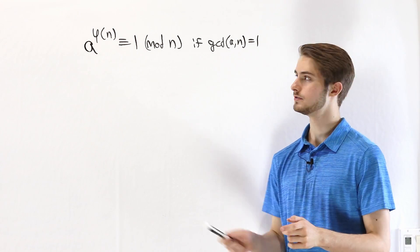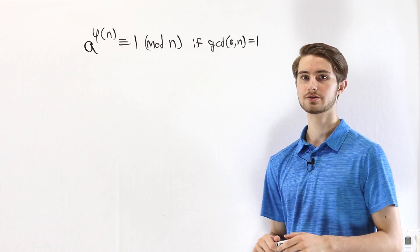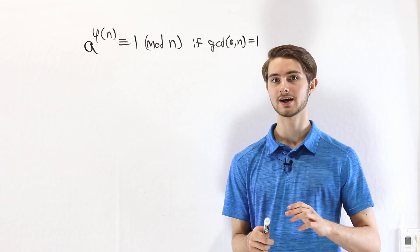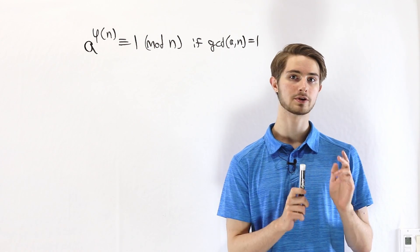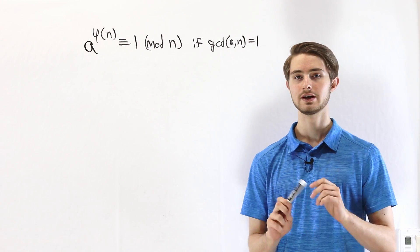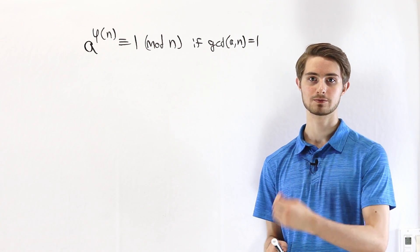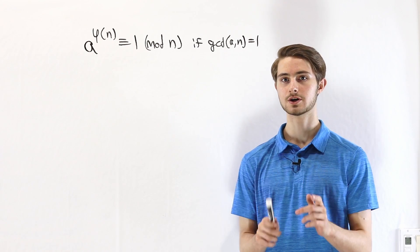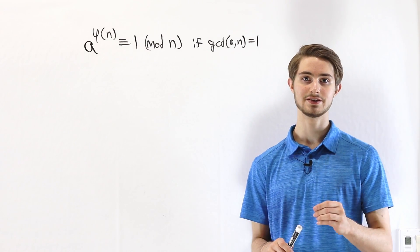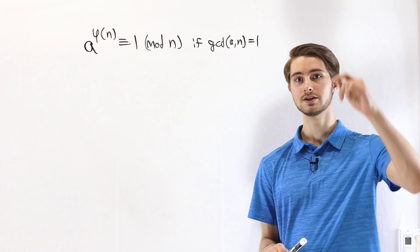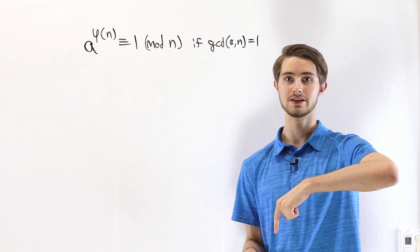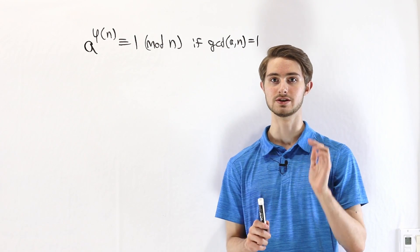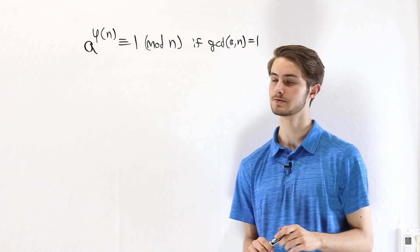In the proof of Euler's Totient Theorem, I'm going to use a few properties that have to do with coprime numbers and how they interact with modular arithmetic. If you aren't familiar with any of the identities that I use, you can check the link in the description where I go through the derivations.